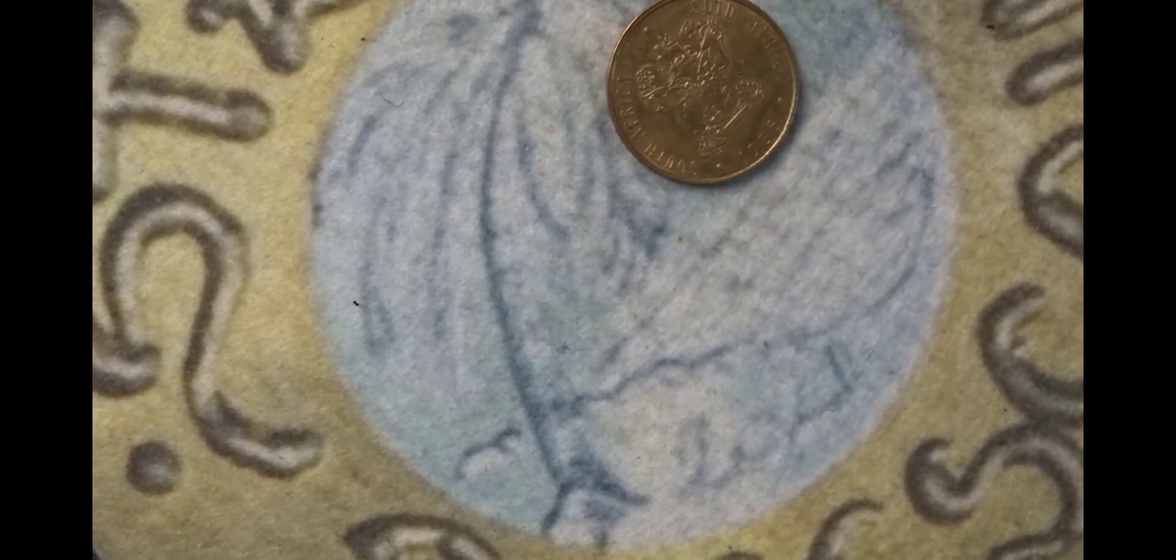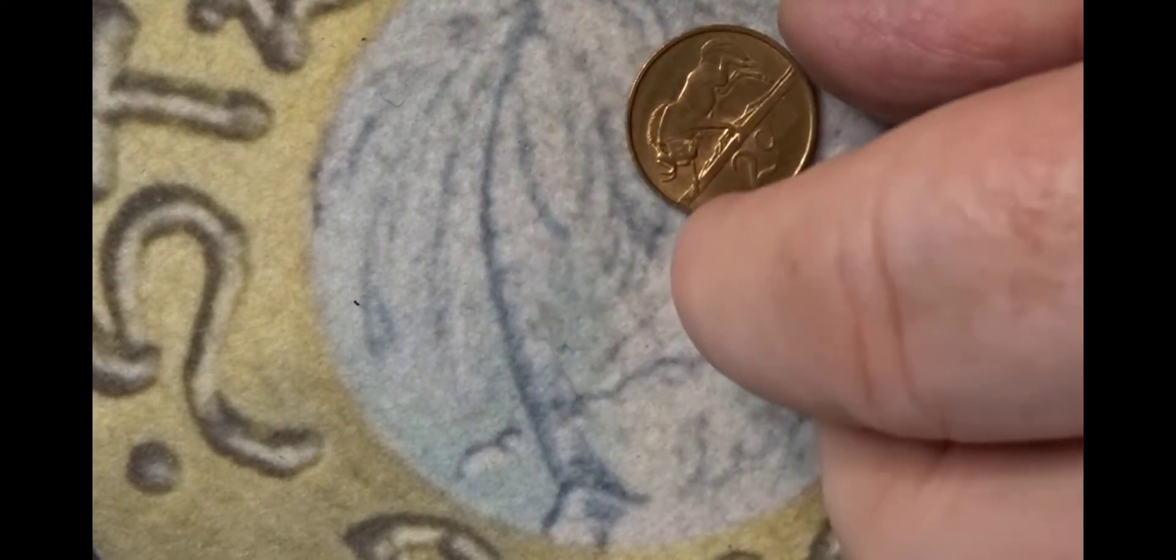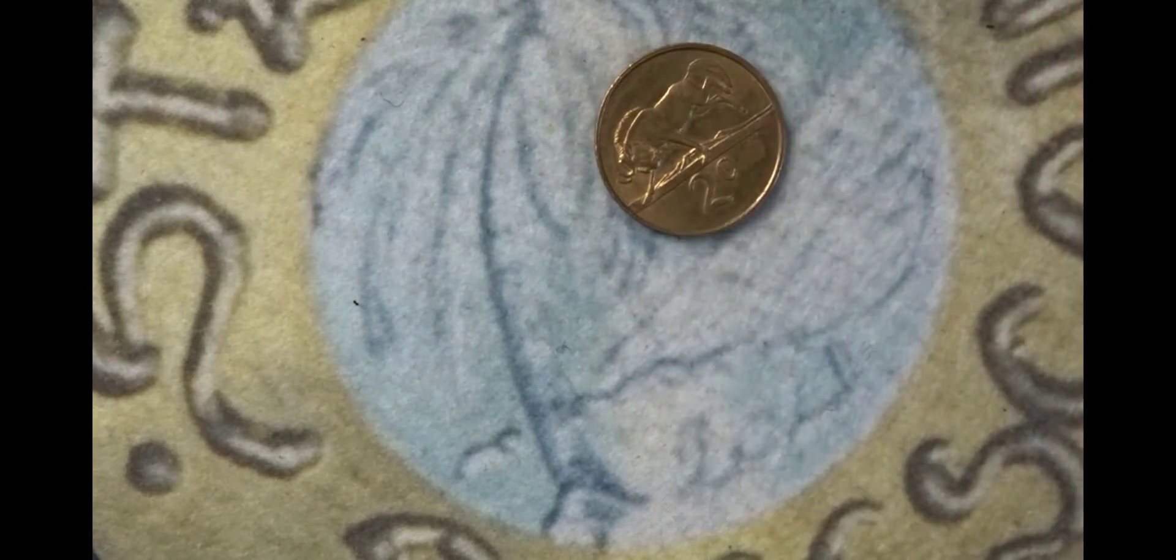Next coin is from South Africa in which we have the coat of arms and the year on the front of the coin. This is a 1986 two cent coin. On the back you have the two cents and the wildebeest charging.